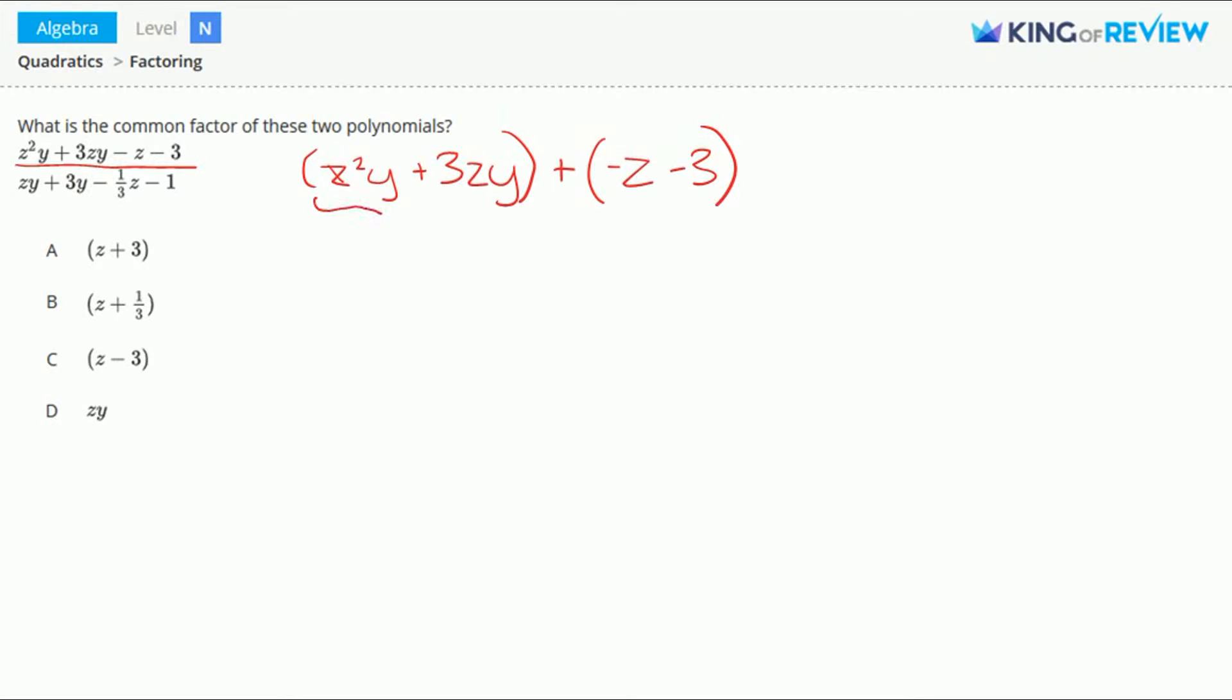Now, looking at this first grouping here, what can we factor out? We can factor out a zy. This gives us zy times z plus 3.